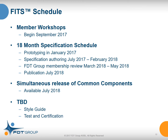From a schedule perspective, we're working aggressively on completing the architecture. We'll begin member workshops on this new architecture in September of this year so members can get their technical staffs geared up. The specification itself will come out publicly in July of 2018. We are currently prototyping the balance of the architecture and will have the specification completely drafted early in 2018. Our membership will review the specification per normal policies, and we expect to release the specification as well as the common components — the developer kits — around July 2018. We will also update our style guide and enhance test and certification procedures to cover these new capabilities.